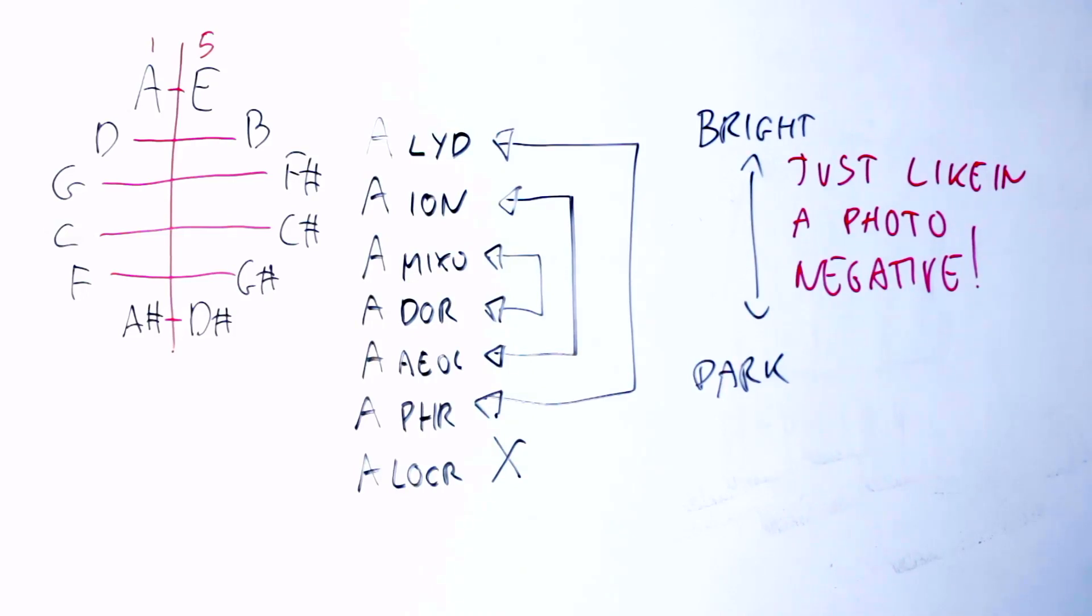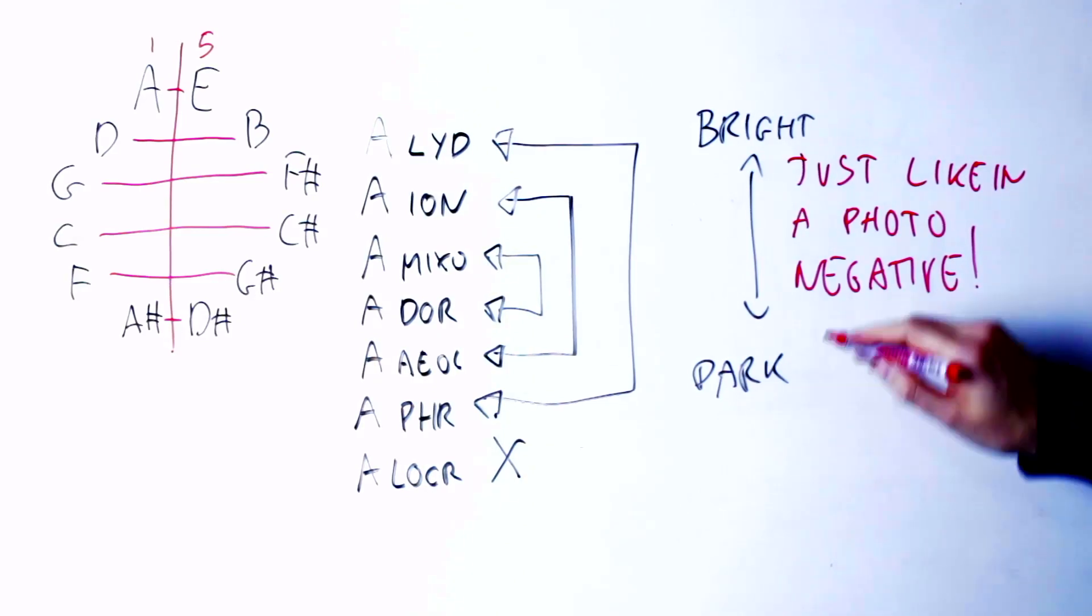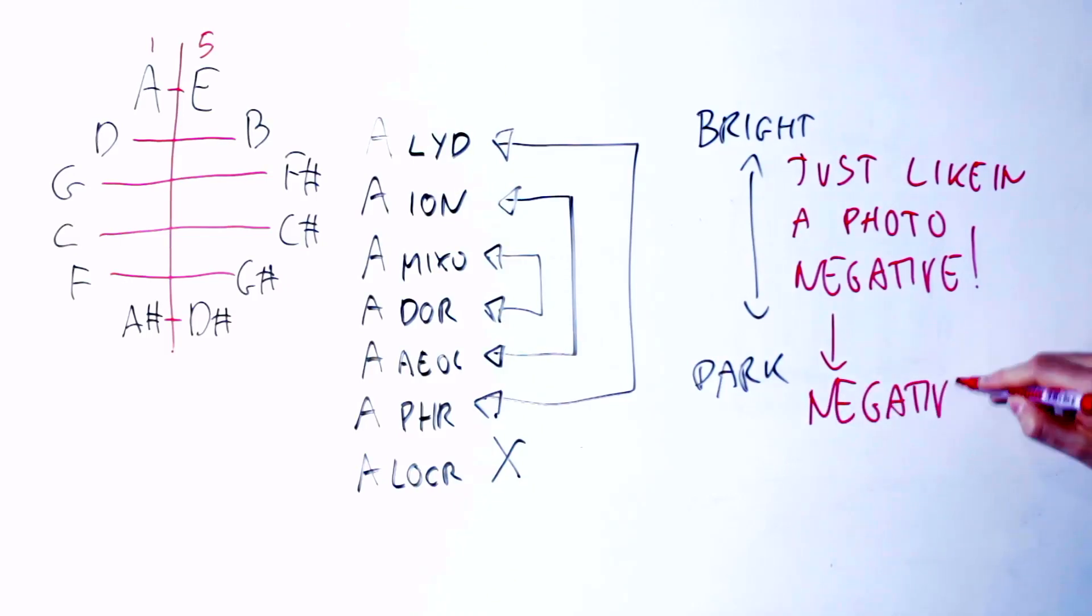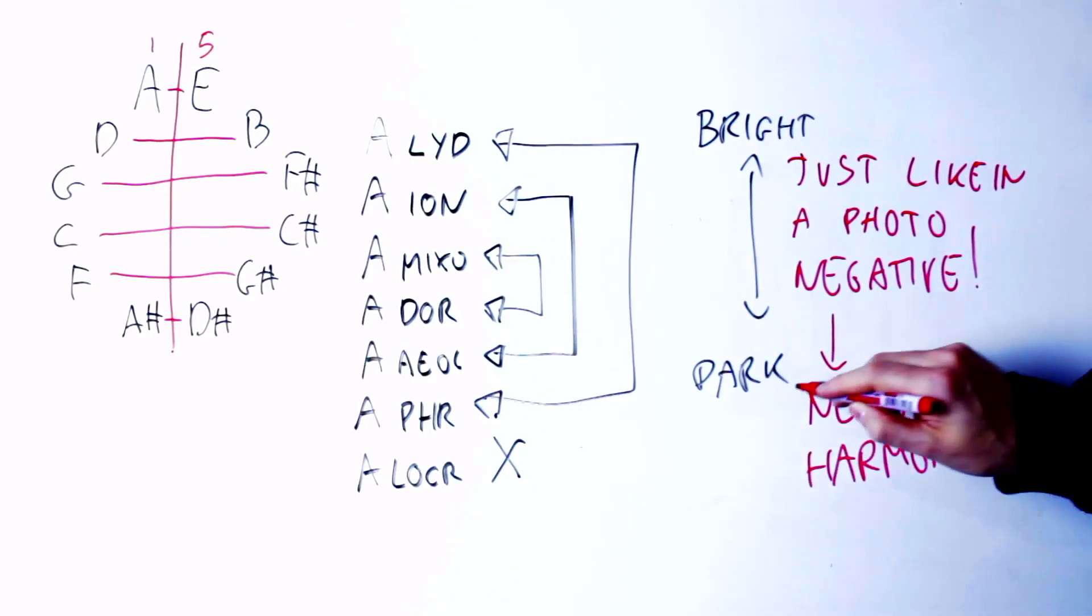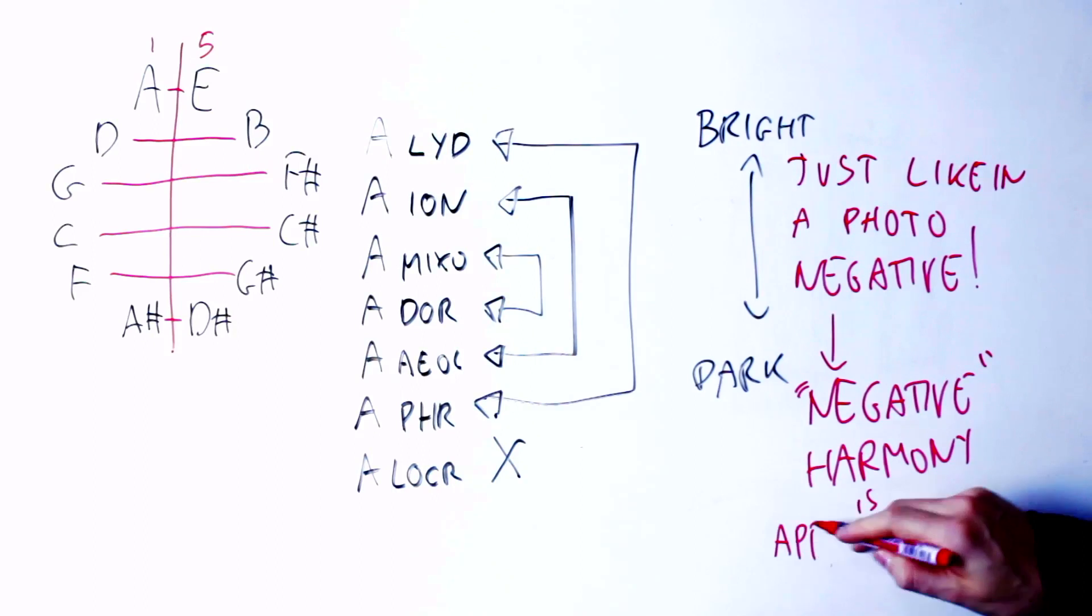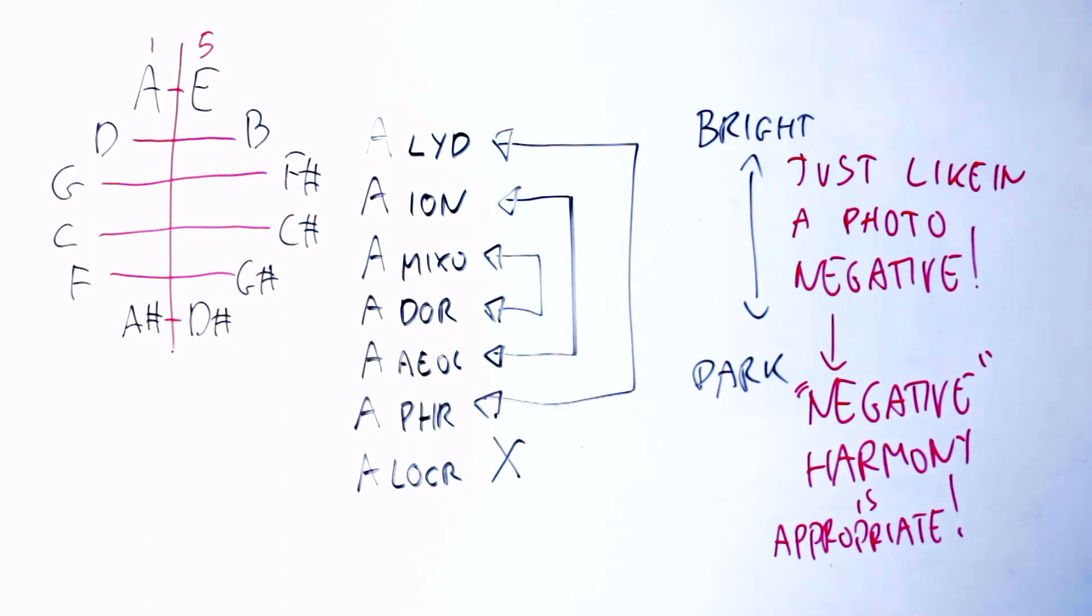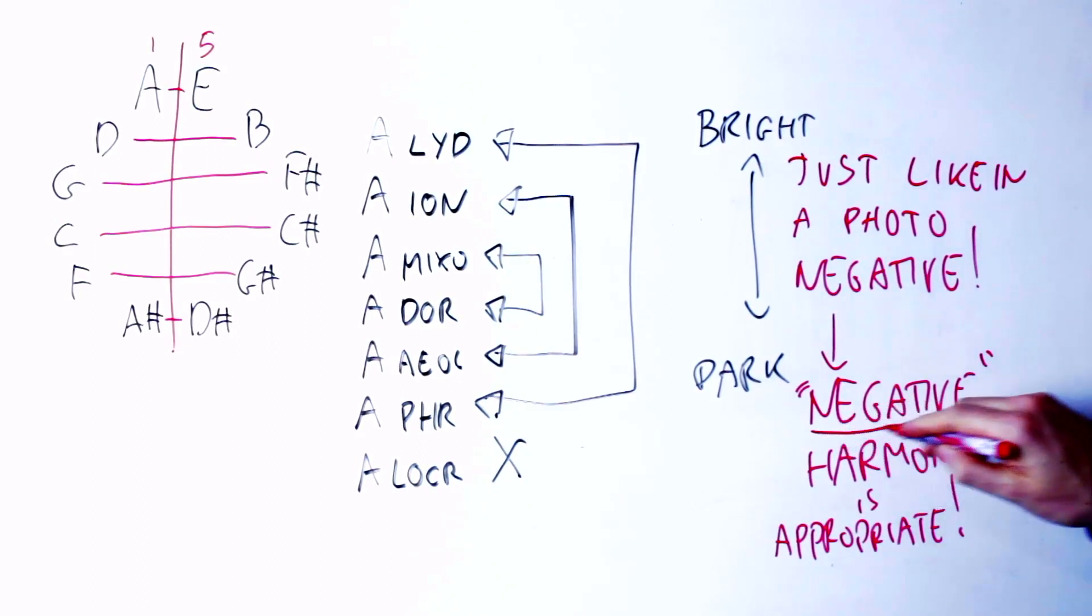This is exactly like it works in a photographic negative. The brighter areas in the picture are the darkest areas in the negative, and vice versa, the darkest areas in the picture are the brightest areas in the negative. So in this case, looking at the order of brightness and noticing how negative harmony flips brightness and darkness, the name negative harmony is very appropriate. And in fact, it's more appropriate than my own suggestion of calling this inverted harmony.